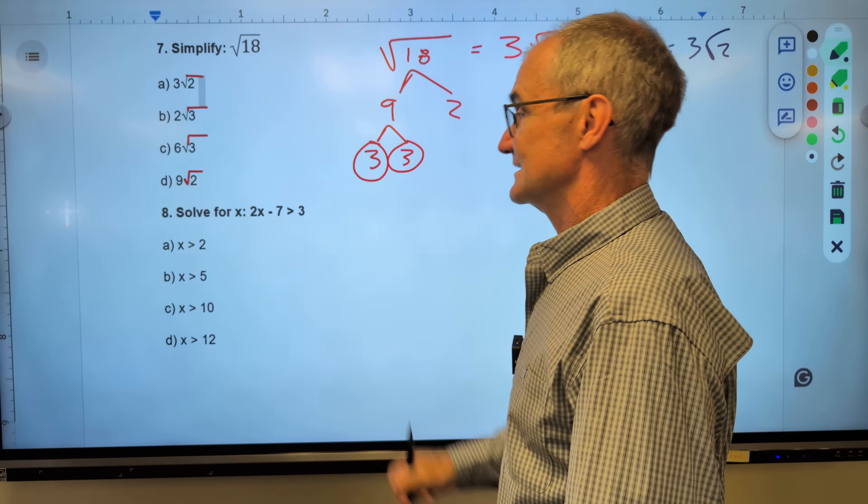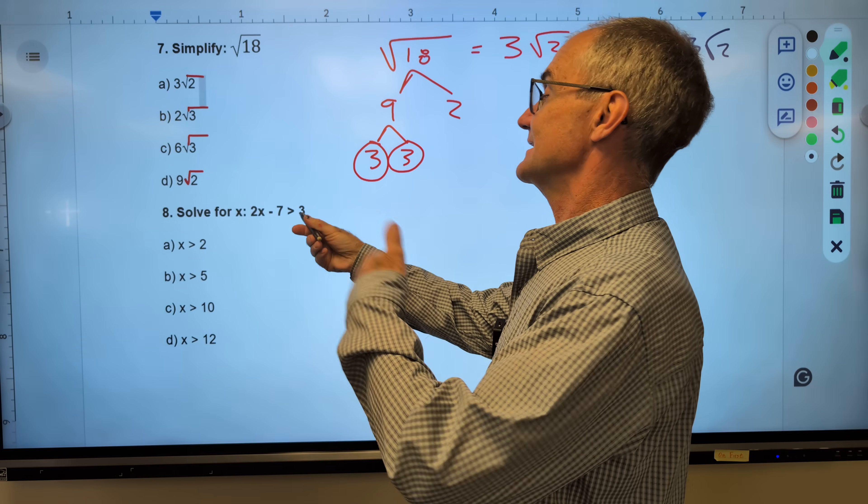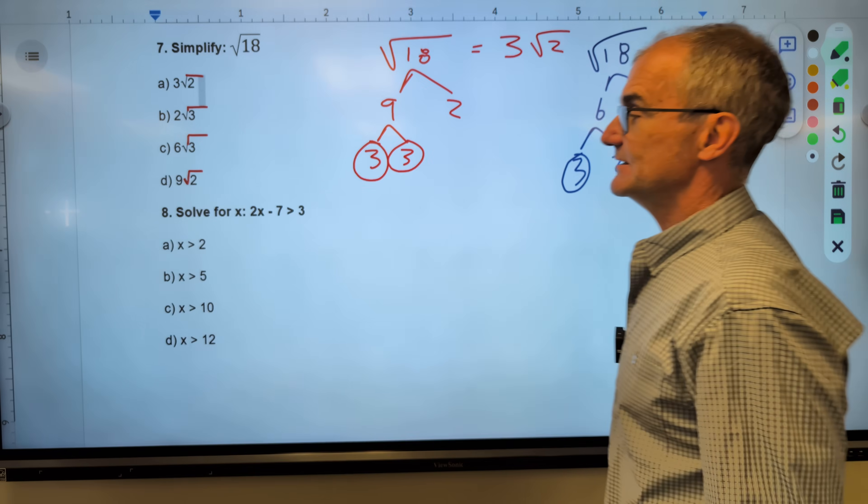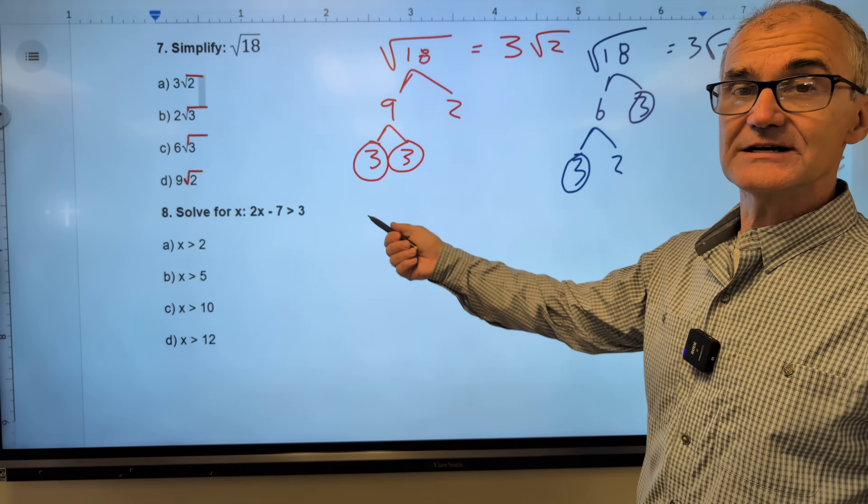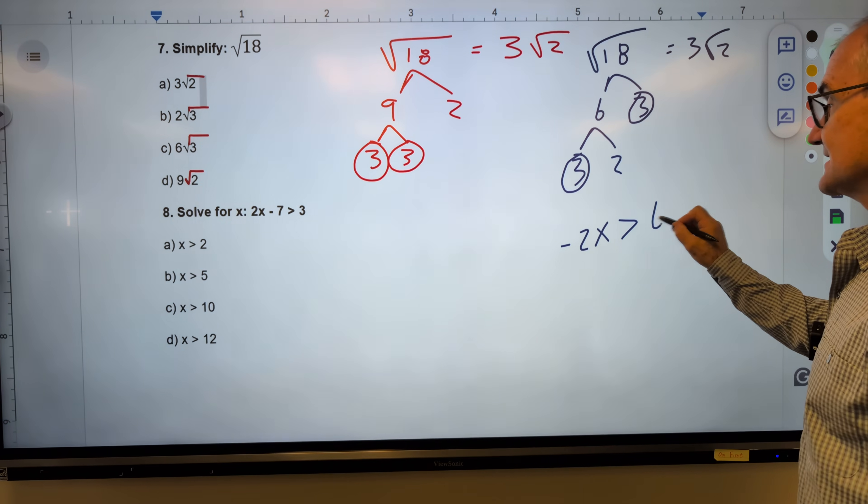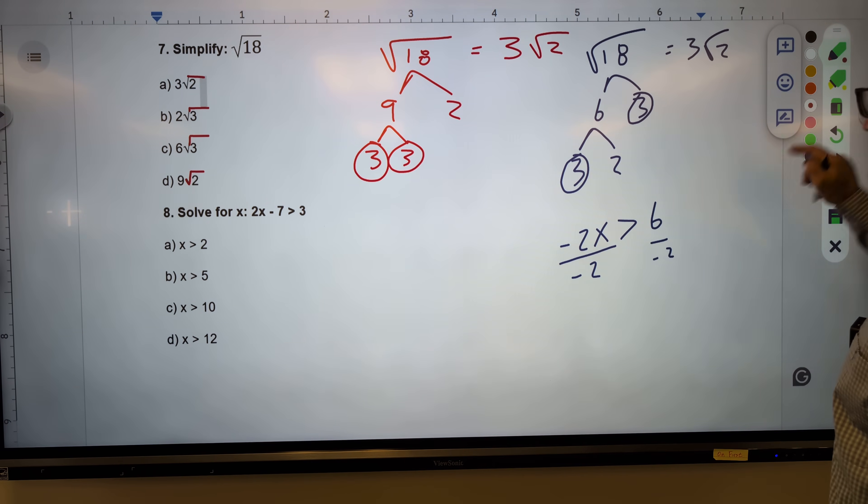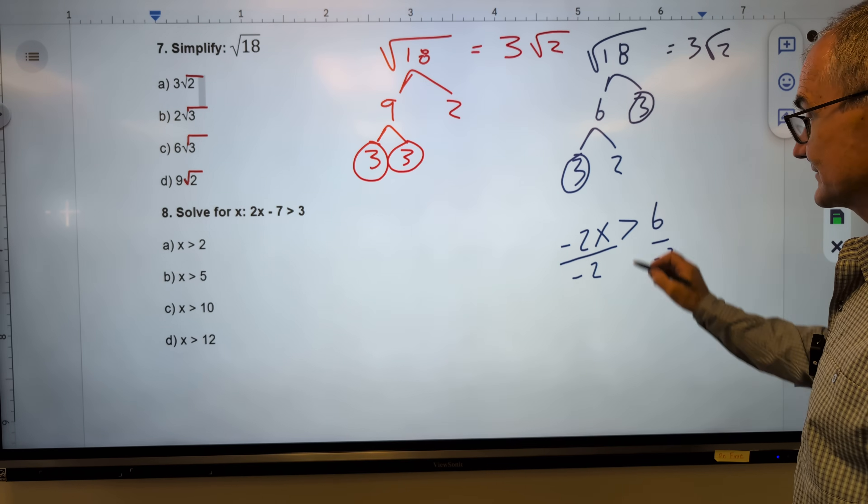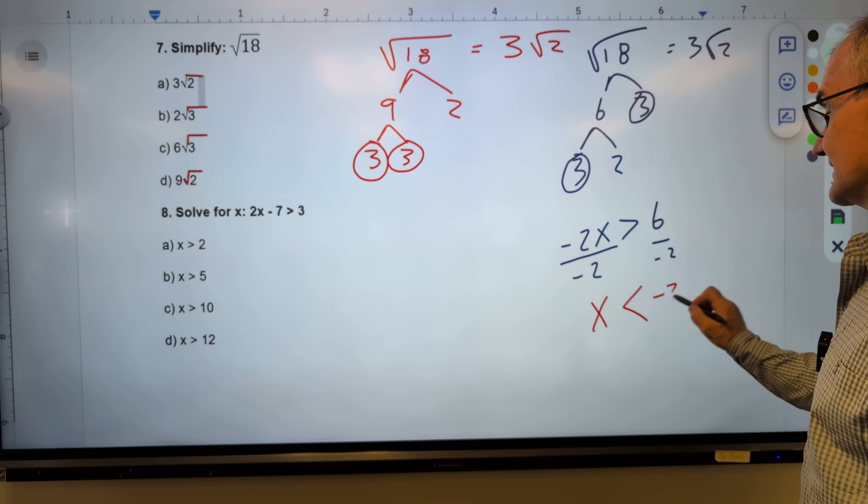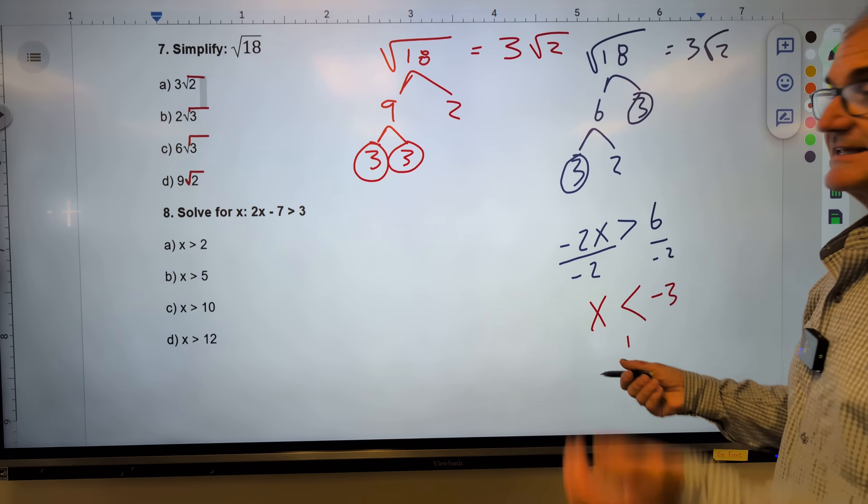This is called an inequality. It is like an equality, an equation. However, it is not equal to 3. It is greater than 3. These are solved just like equations with one really important thing. If I have negative 2x is greater than or less than 6, when I divide by a negative, I switch that sign. So I'm dividing by a negative. This is greater than. This becomes less than. X by itself, negative 3. It's not going to matter on this one, but this is the most important rule to remember with inequalities.